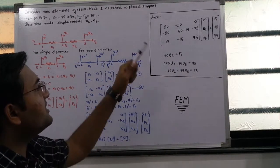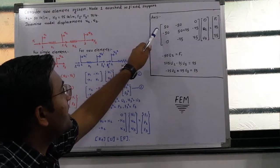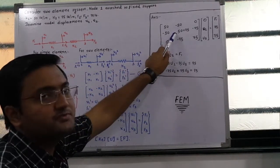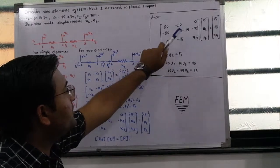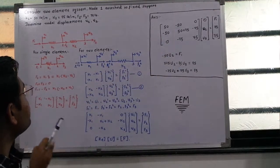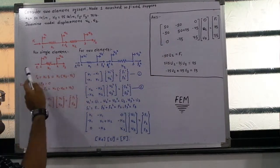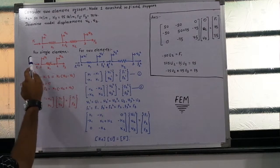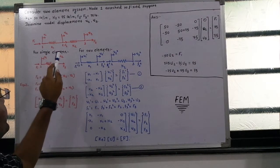The question arises: how is this matrix formed, and what is the theory behind it? To answer this, I have taken two different aspects. First, we consider a single element system.